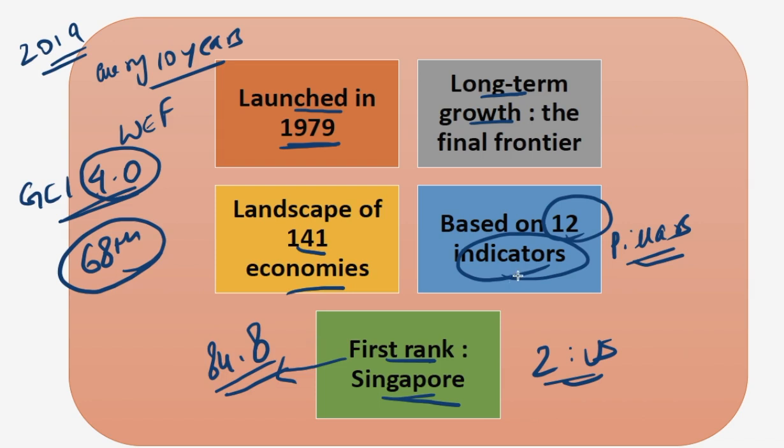103 indicators are organized into 12 themes or pillars. Each indicator uses a scale from 0 to 100, which shows how close an economy is to the ideal state or the frontier of competitiveness.